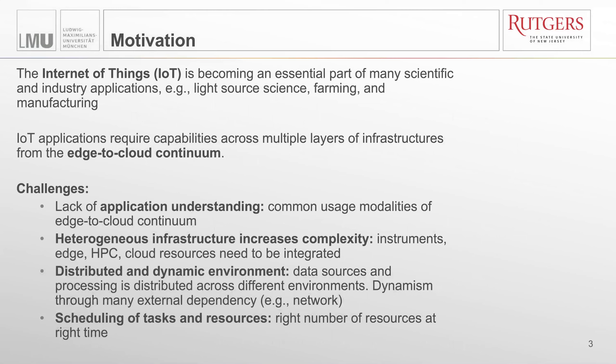The Internet of Things is becoming an essential part of many scientific and industrial applications. For example, light sources like the National Synchrotron Light Source 2 at the Brookhaven National Lab are generating data at growing rates of up to 20 gigabytes per second and are crucial to understand, for example, the structure of materials and the building blocks of life.